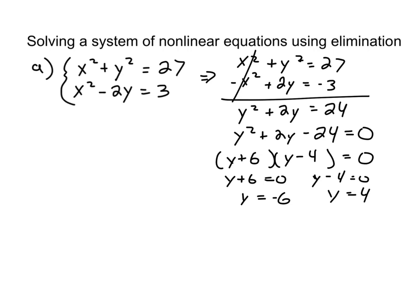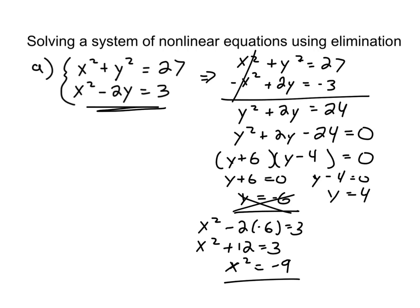So, now I can use back substitution to find the corresponding value of x. So, let's start with y equals negative 6. So, I can choose either of these equations. I'll go ahead and choose the second one. So, I'll have x squared minus 2 times negative 6 equals 3. x squared plus 12 equals 3. Subtract 12 from both sides. x squared equals negative 9. Oh, there's no value of x that's going to make that true. So, y equals negative 6 is not a solution.